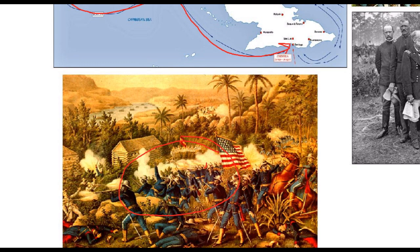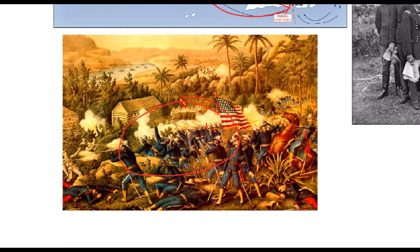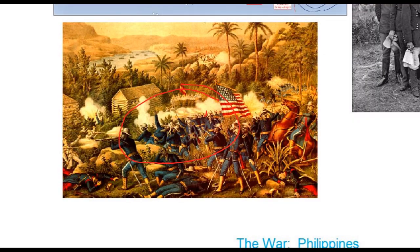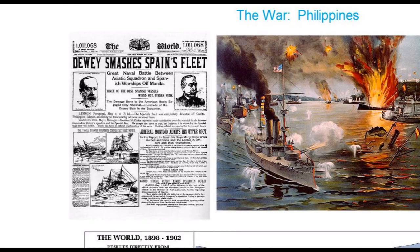Despite poor organization, poor leadership, poor food, and poor equipment, the U.S. managed to win the war in Cuba, occupying it by July 1898. On the other side of the conflict, in the Philippines, the U.S. Navy had been dispatched at the very beginning of the war by Theodore Roosevelt, who was then assistant secretary of the Navy before he resigned to become a Rough Rider.